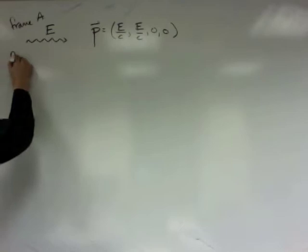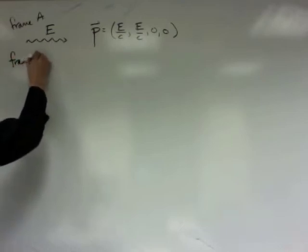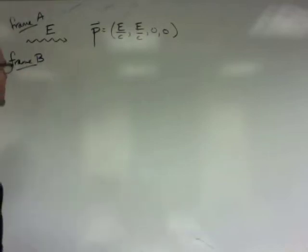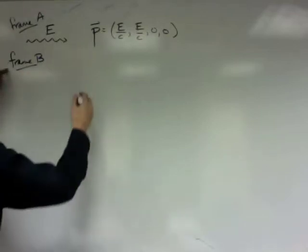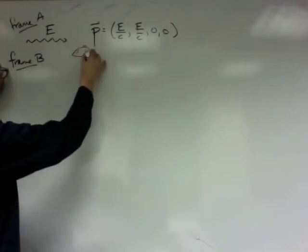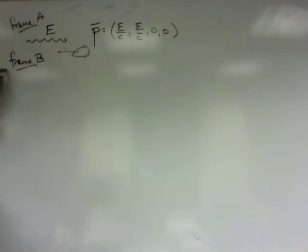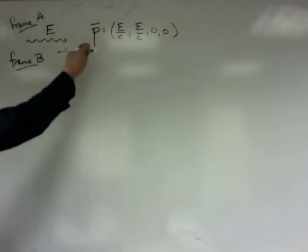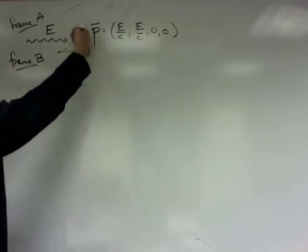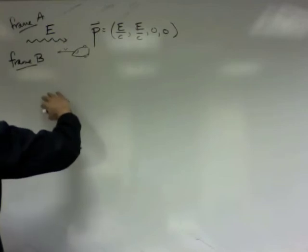Let's look at this photon in frame B. In frame B, let's imagine frame B is the point of view of someone who's in a rocket ship flying this way at speed beta. If this person in this rocket ship is flying this way at speed beta, then what we have to do is we have to Lorentz transform everything in this frame to get it to this frame.